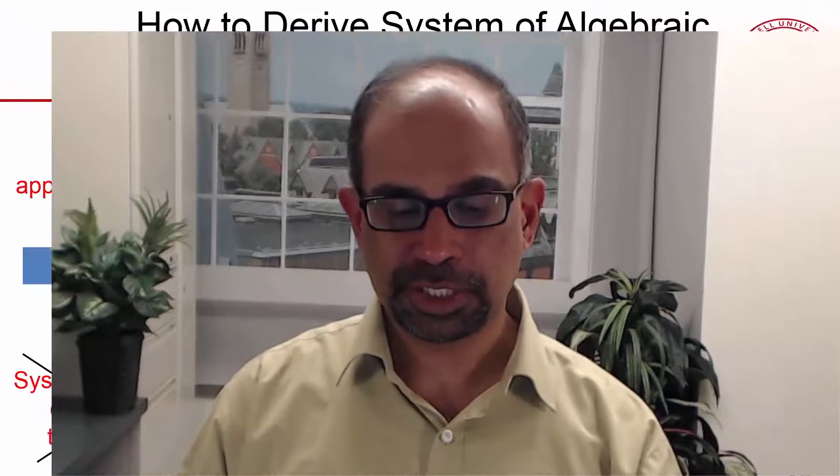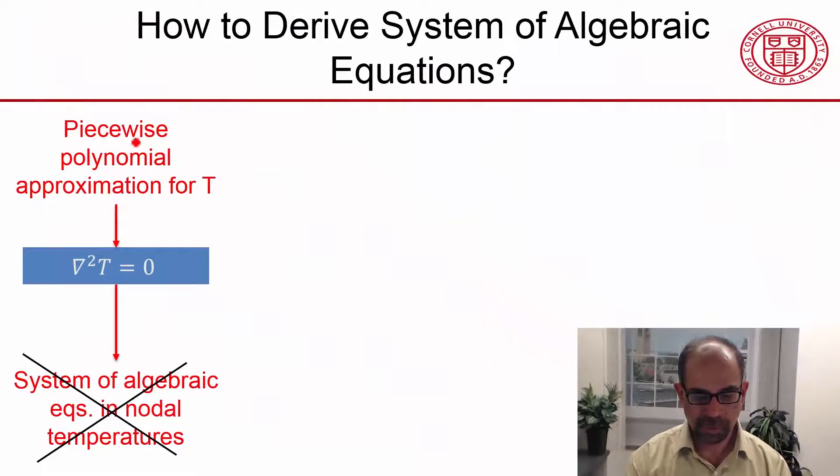How to derive the system of algebraic equations? We have our piecewise polynomial approximation for the temperature. That's an assumed shape that's constructed element by element.